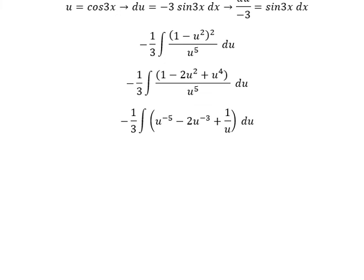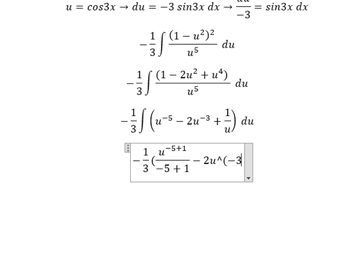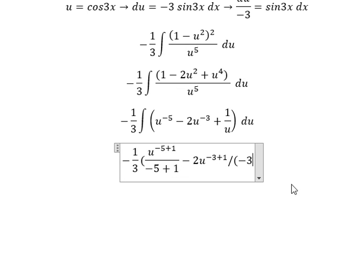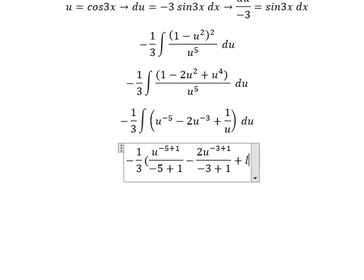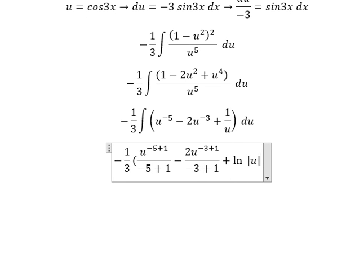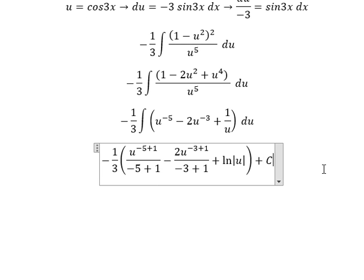Now we have the integrated result: u^(-4)/(-4) - 2u^(-2)/(-2) + ln of the absolute value of u, plus C.